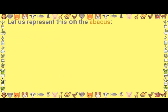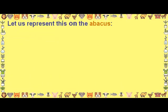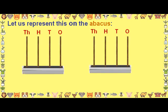Let us represent this on the Abacus. The 4 rods of the Abacus represent the place values of 1s, 10s, 100s, and 1000s from right to left.